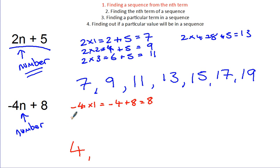For the second term, I'm going to do minus 4 times the number 2, which is minus 8. I'm going to add on the 8, which gives me a value of 0. For the third term, minus 4 times 3. Add on the 8, gives me a value of minus 4.